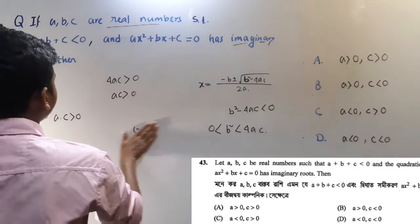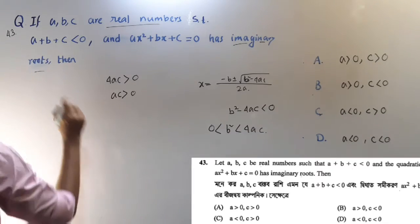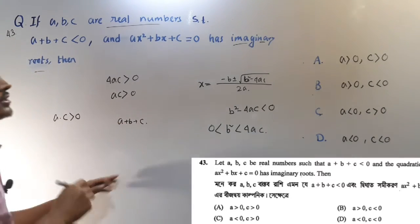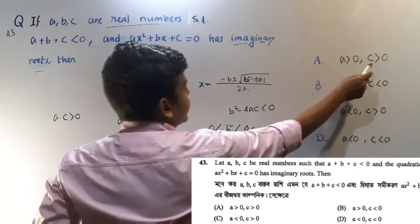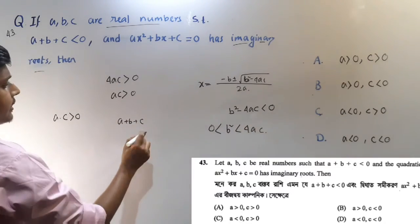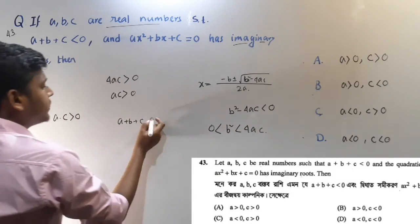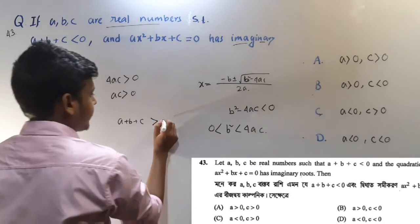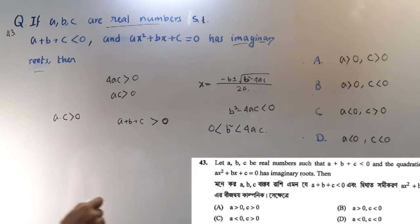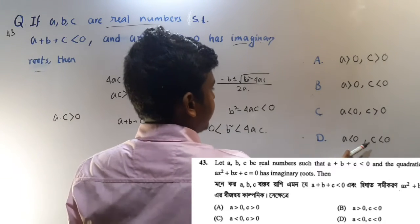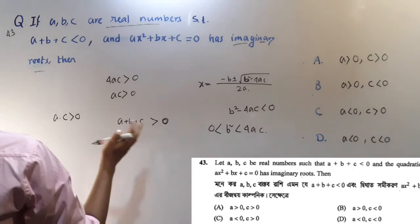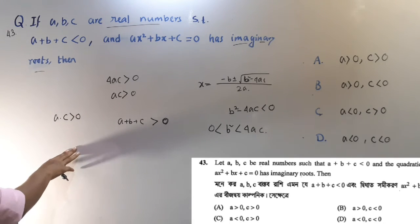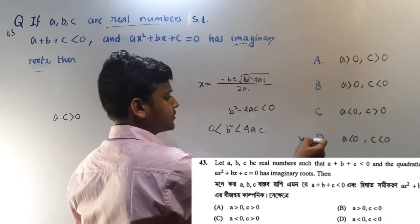Now, A plus B plus C is negative. From A plus C greater than 0 and analyzing the condition: if A plus C is greater than 0, the overall condition must still satisfy A plus B plus C being negative.